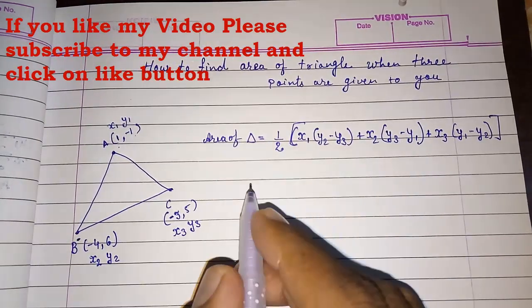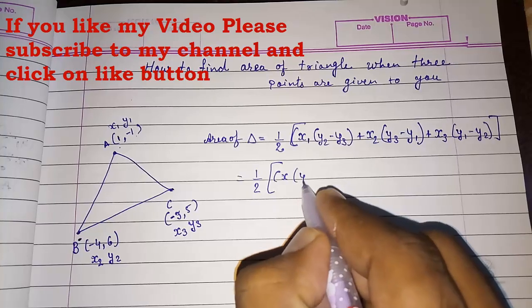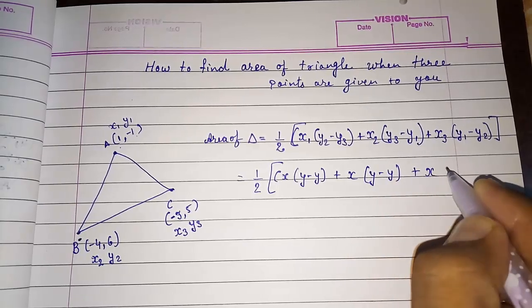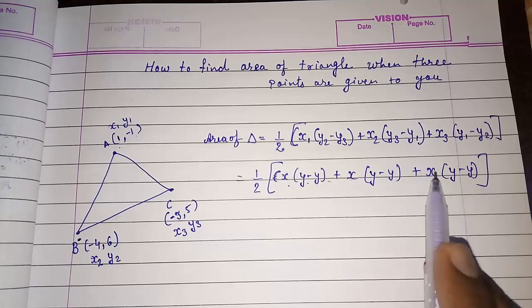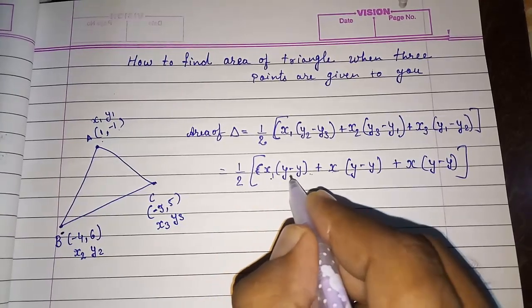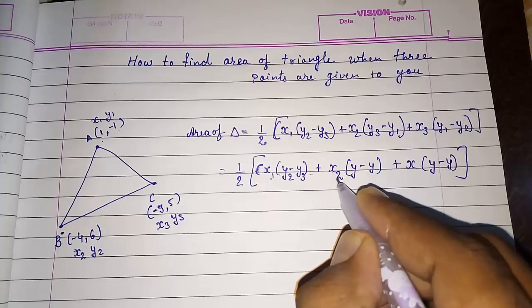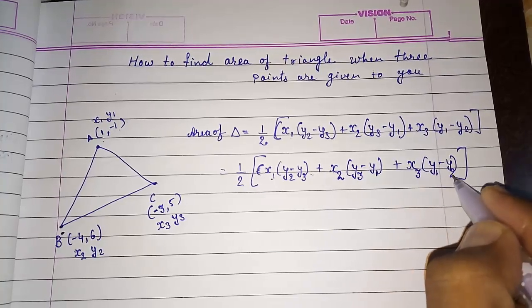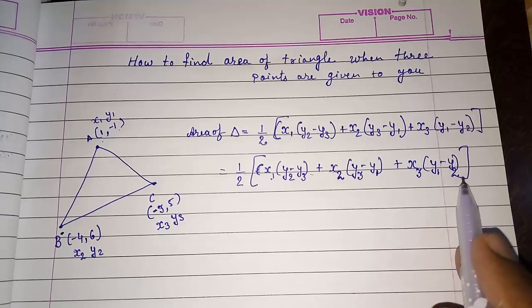To remember this formula easily, write one-half, then: x times (y minus y), plus x times (y minus y), plus x times (y minus y). You can remember this pattern. Now, for the subscripts, with x1 the order is 1, 2, 3. Then take 1 to the back: 2, 3, 1. Then take 2 to the back: 3, 1, 2. So the subscripts are: x1(y2−y3) + x2(y3−y1) + x3(y1−y2).